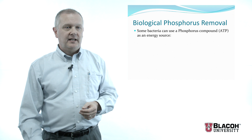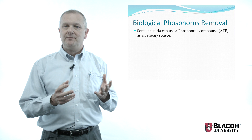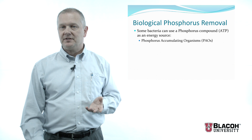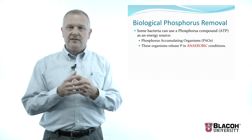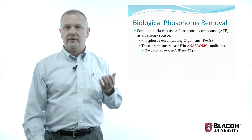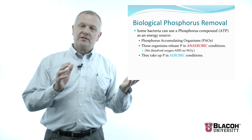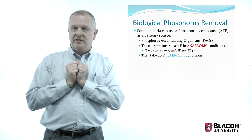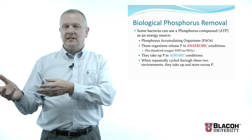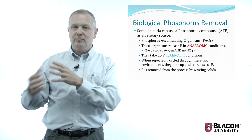Biological phosphorus removal is accomplished by microorganisms called PAOs — phosphorus accumulating organisms. These organisms can use the phosphorus compound ATP (adenine triphosphate) as an energy source. They release phosphorus from ATP in their cells when they enter an anaerobic environment, meaning no dissolved oxygen and no nitrate — essentially no oxygen source at all. When those same organisms are placed into an aerobic environment, they absorb phosphorus into their cells. By repeatedly cycling these organisms through anaerobic and aerobic zones, they absorb excess phosphorus, which is then removed from the system by wasting those solids — removing those bacteria out of the system.